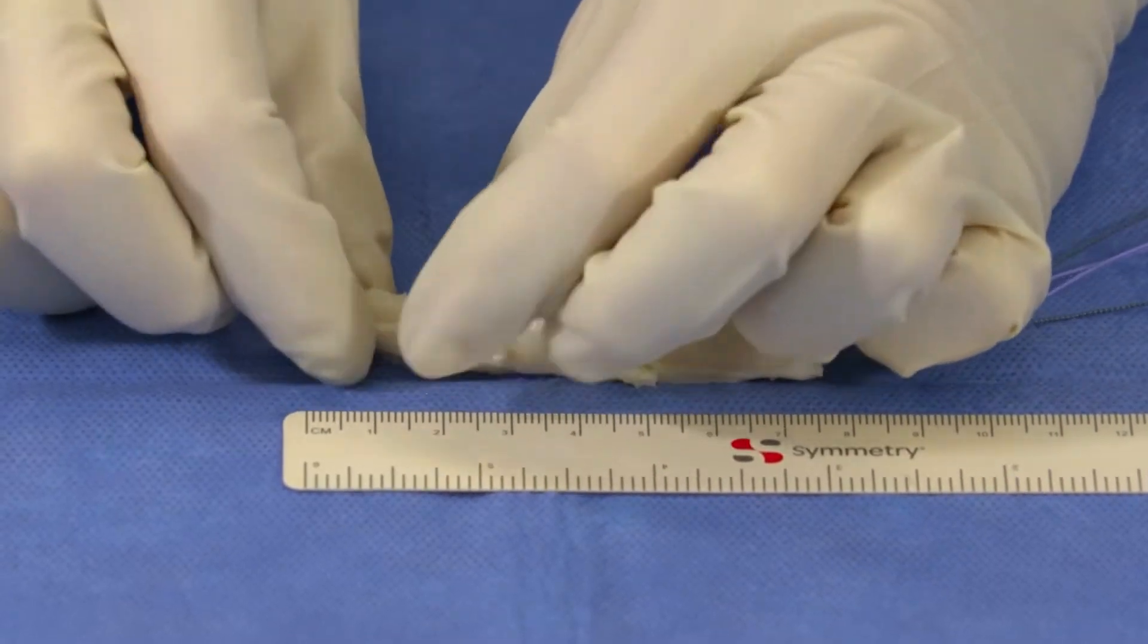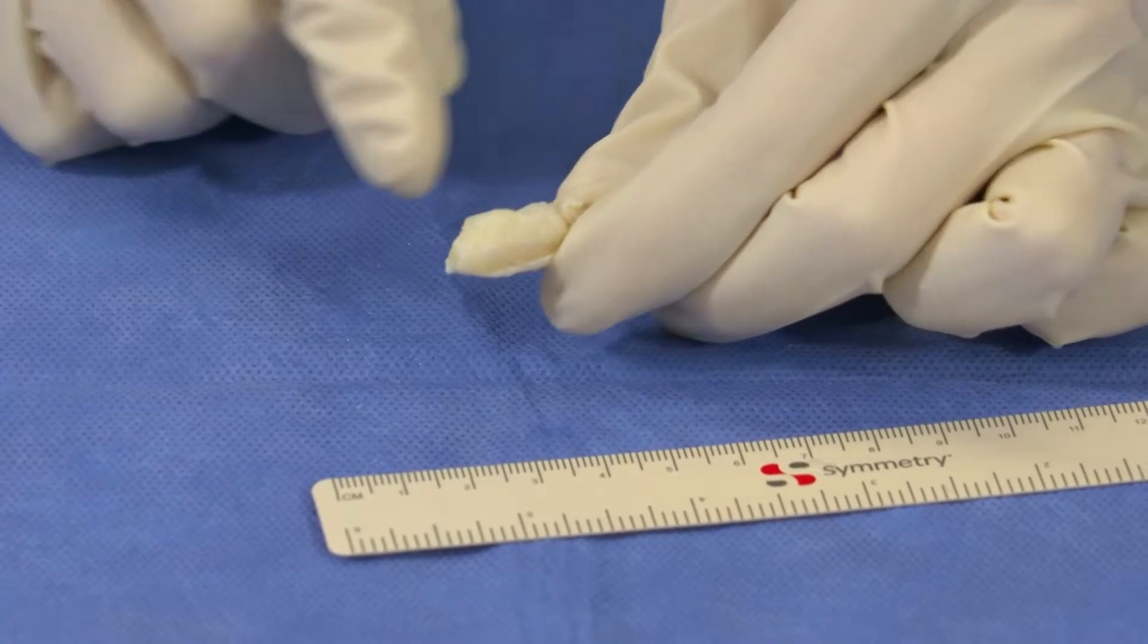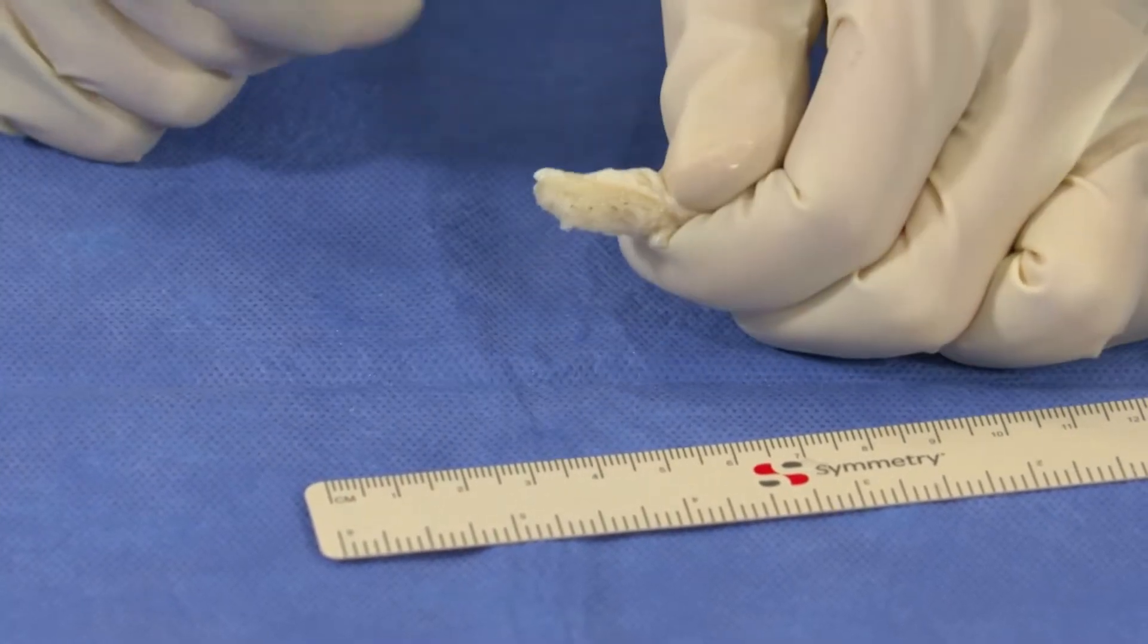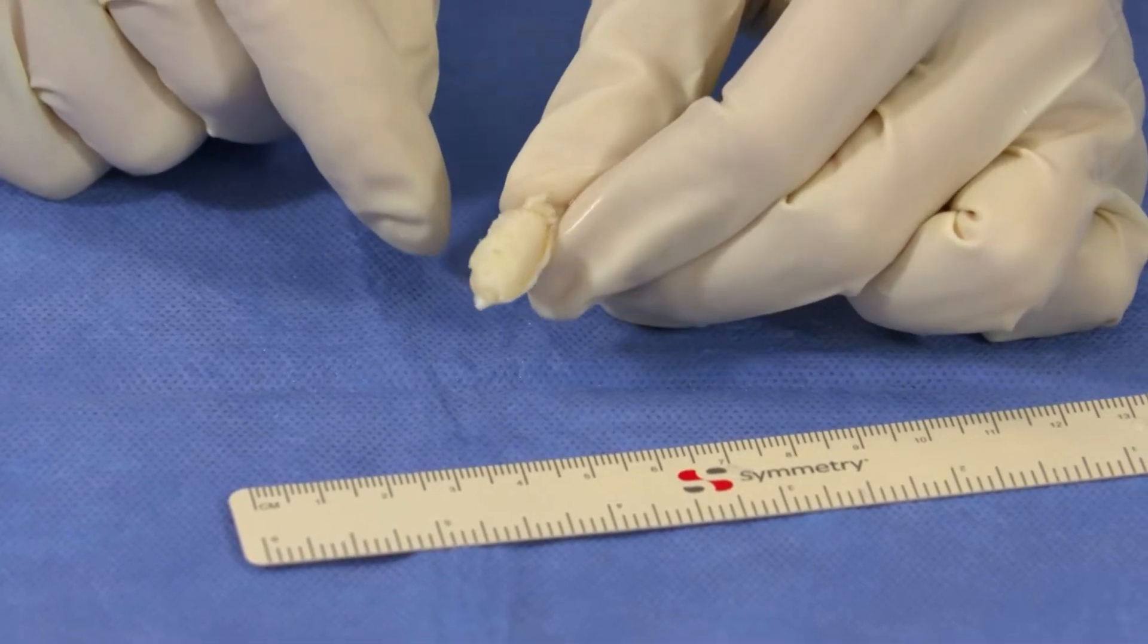The other key point for the femoral side in order for assuring passage through the femoral tunnel is to keep this bulleted, devoid of any extra soft tissue, so that it can pass nicely through the femoral socket.